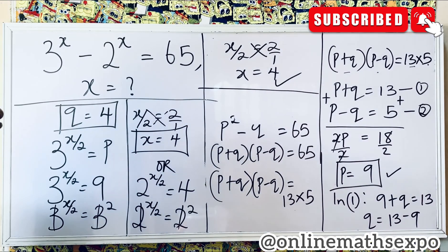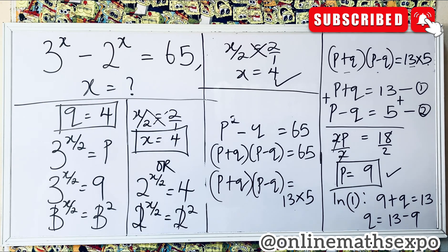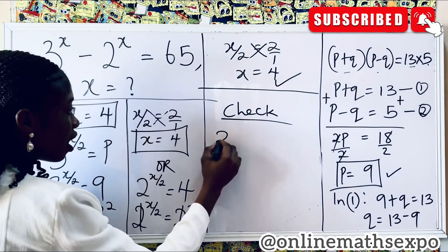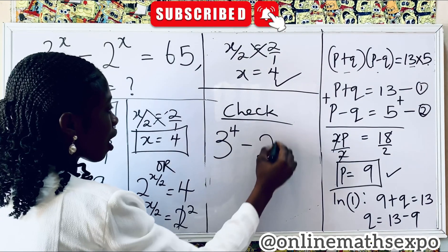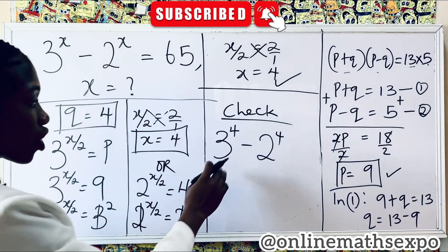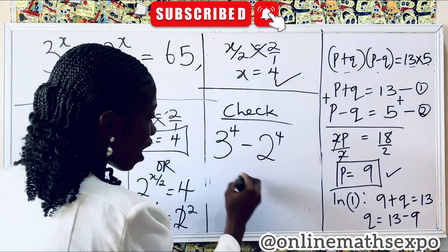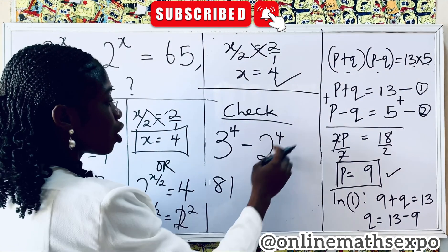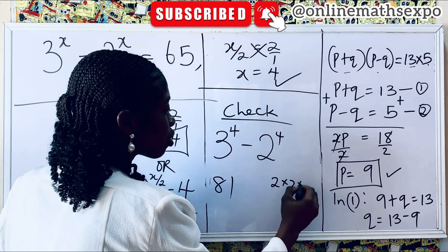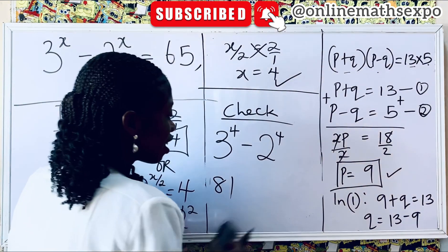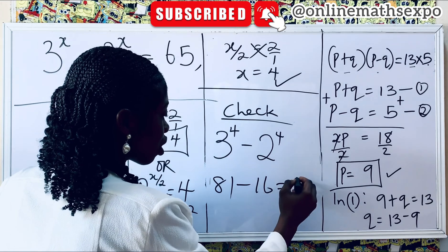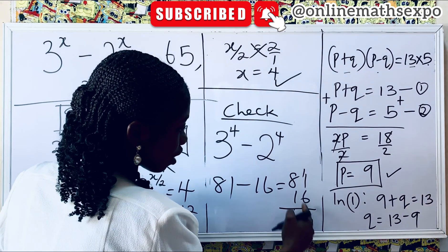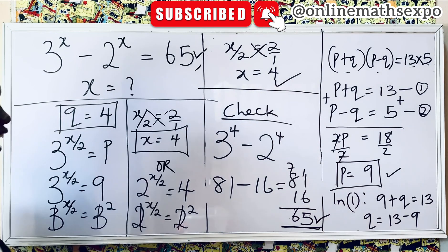Now that we have x equals 4, let's do a quick check to see if it corresponds to the original question. Substituting x equals 4: 3 to the power of 4 minus 2 to the power of 4. Now 3 to the power of 4 is 3 multiplied 4 times, giving 81. And 2 to the power of 4 is 2 multiplied 4 times, giving 16. So 81 minus 16 equals 65, which is exactly the right-hand side. The answer is confirmed.